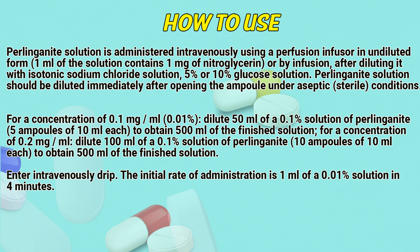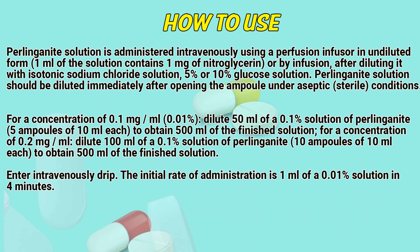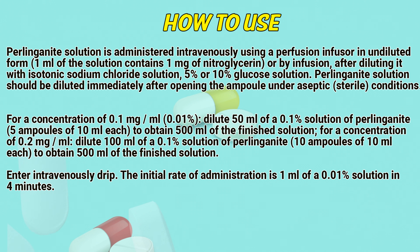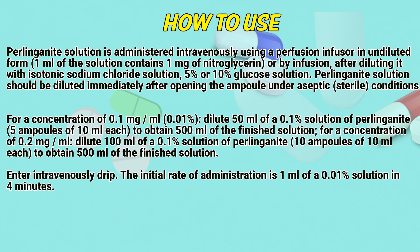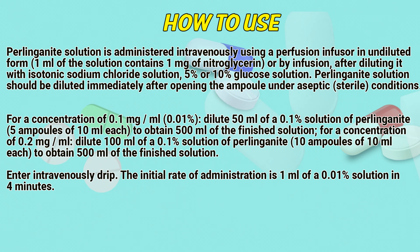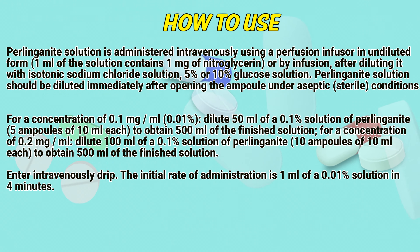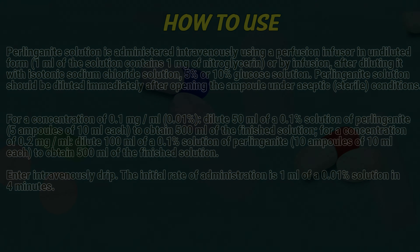For a concentration of 0.2 mg per ml, dilute 100 ml of 0.1% solution of perlingonide (10 ampoules of 10 ml each) to obtain 500 ml of the finished solution. Administer intravenously by drip. The initial rate of administration is 1 ml of a 0.01% solution in 4 minutes.